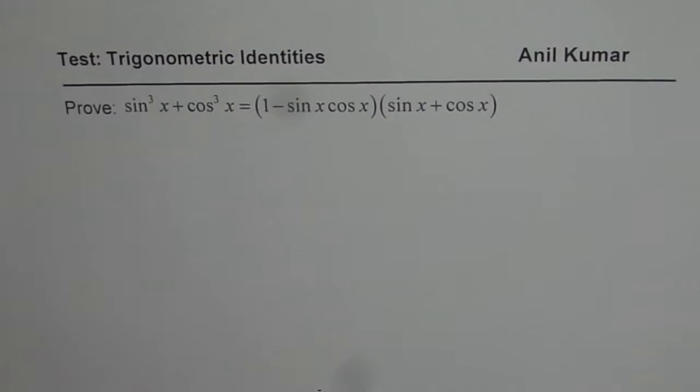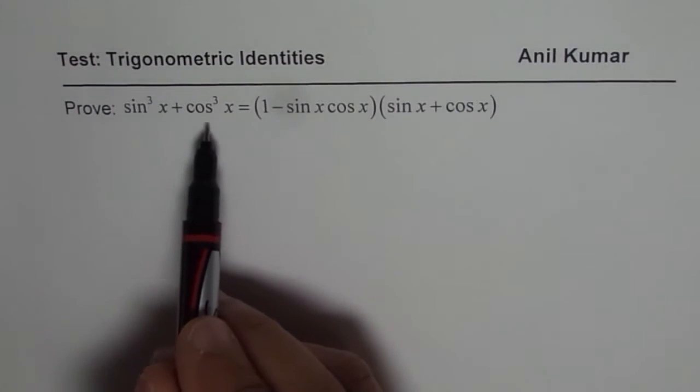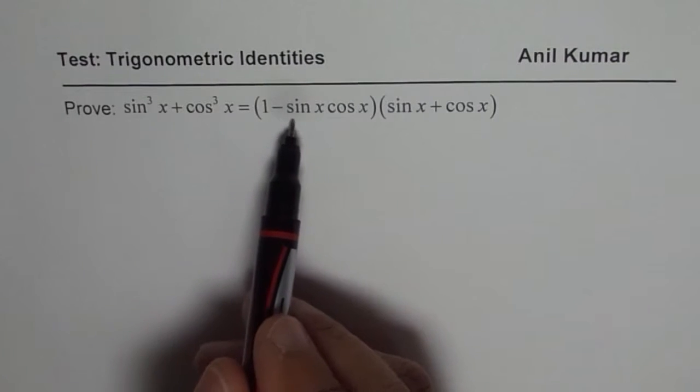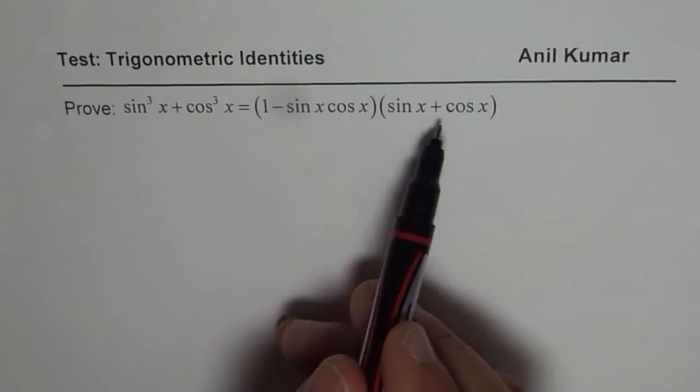I am Anil Kumar and here is a trigonometric identity on addition of cubes. So the question is, prove sin³x + cos³x = (1 - sin x cos x)(sin x + cos x).